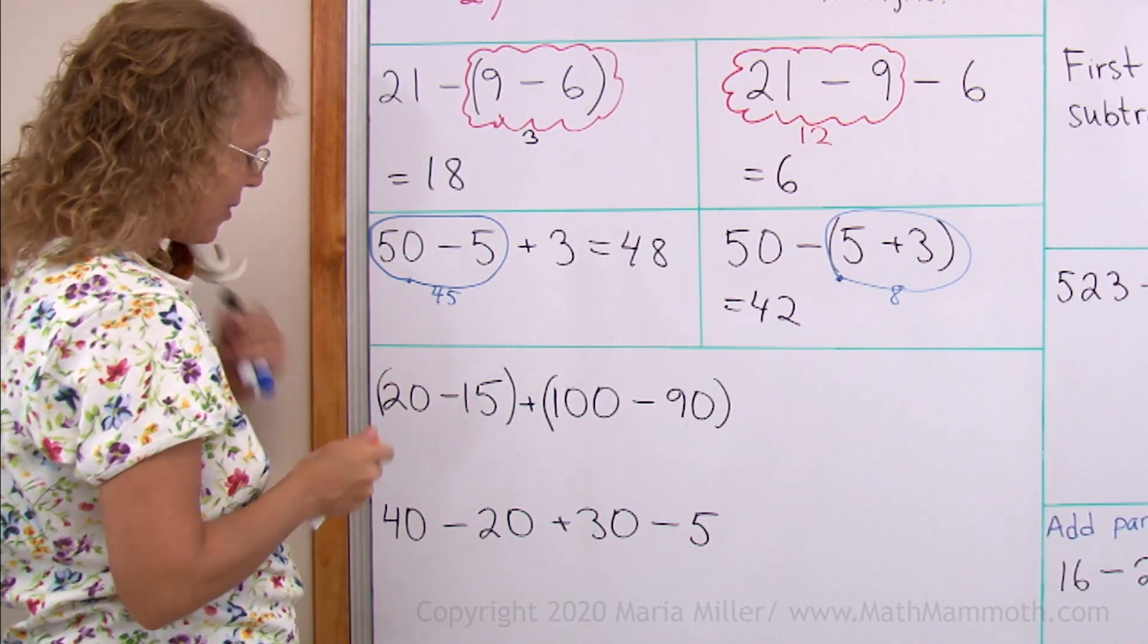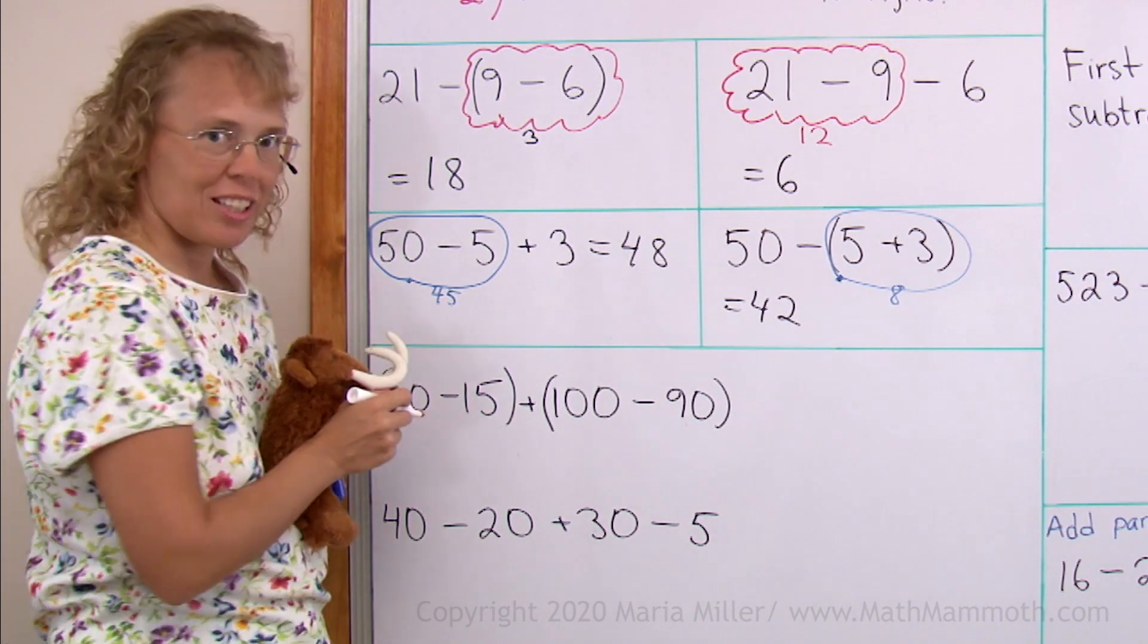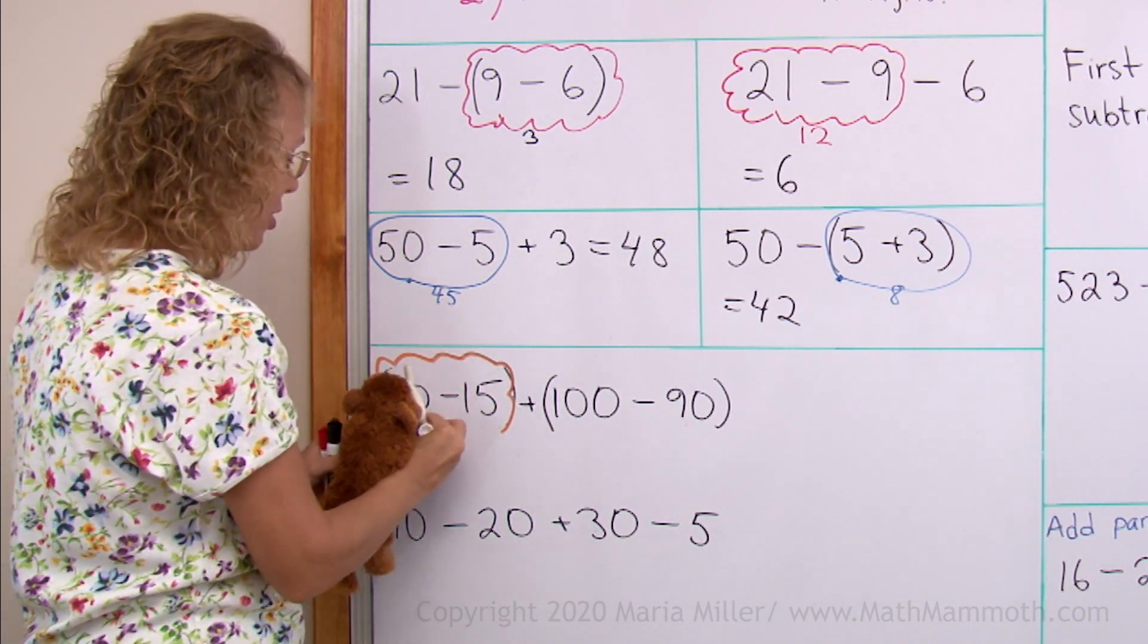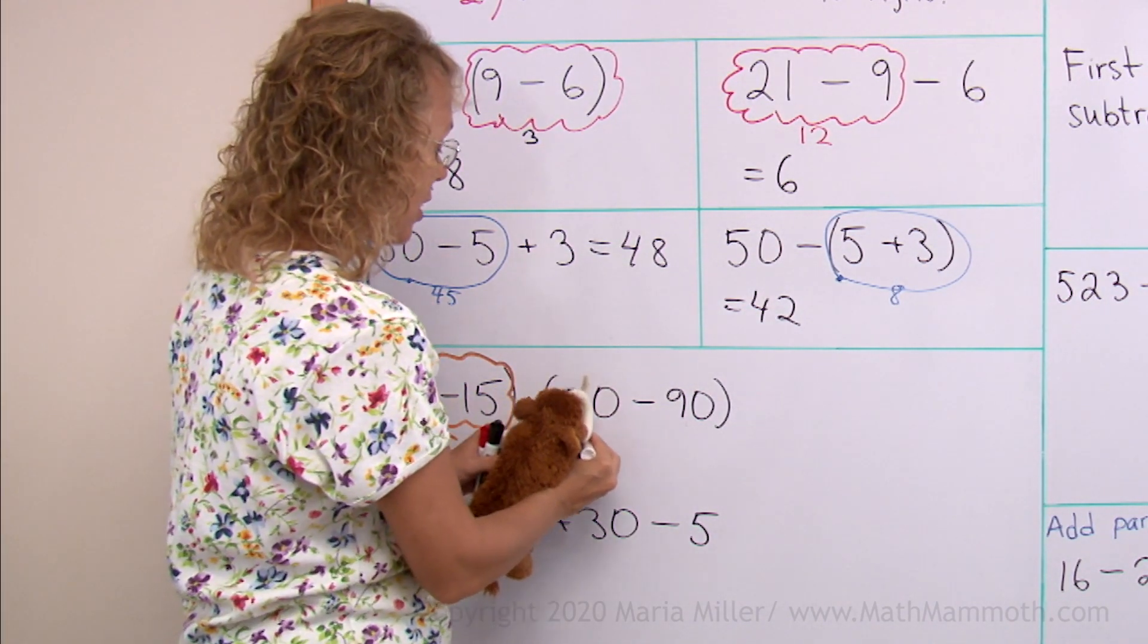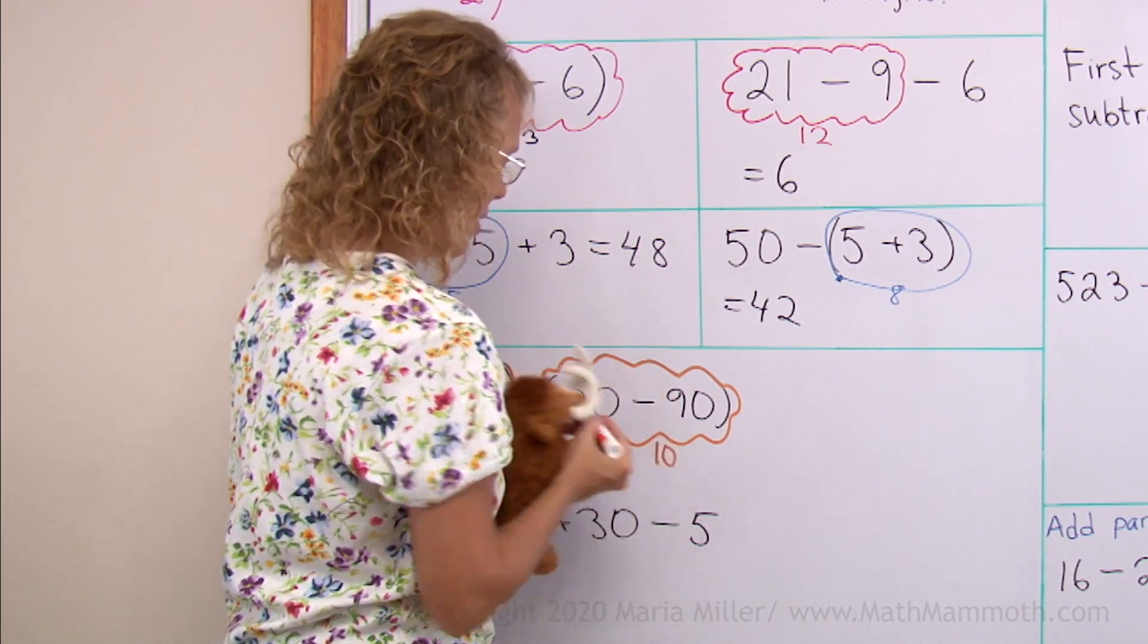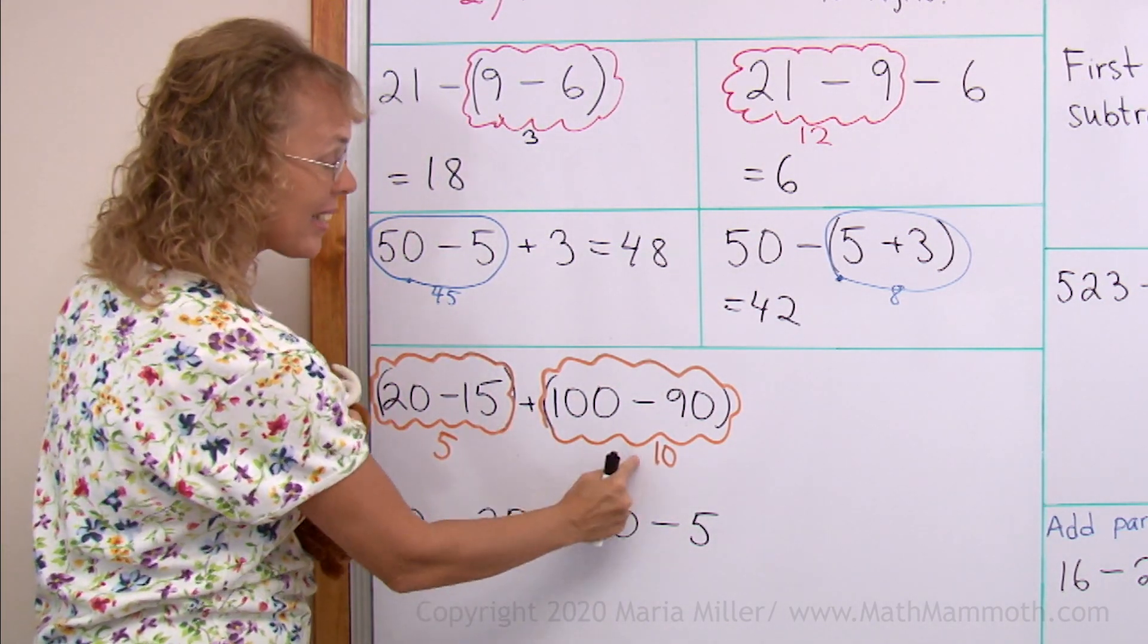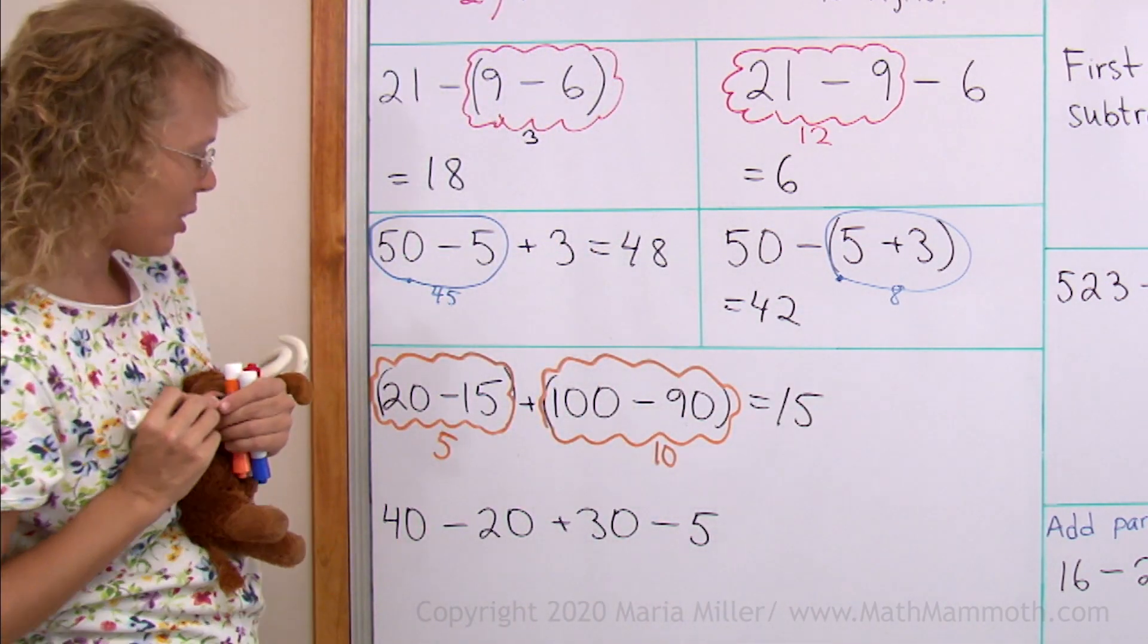Some more practice. Come on, Matthew. What shall we do first in this one? Yep, we shall do this first, and that is 5. And then we shall do this other parentheses. 100 minus 90, that would be 10. And then 5 plus 10. So we get 15 for this complicated expression.